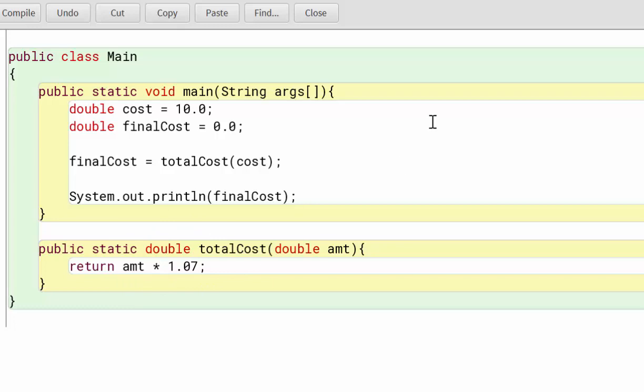We also have another variable called finalCost, which we've also set to double. That's because we don't know what the final cost is going to be. Then we have our finalCost being set to, and then we have our method called totalCost, which passes down cost. It does a calculation, returns it, stores it in finalCost, system.out.println, it outputs the final cost. If you're new to Java, it can be very overwhelming to know what's going on or to even know what this stuff down here means.